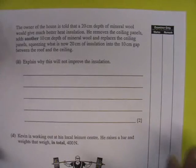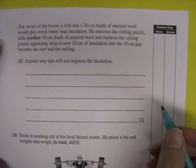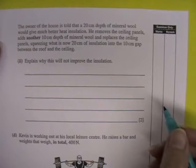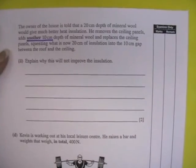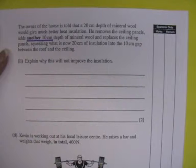The owner of the house is told that a 20cm depth of mineral wool would give much better heat insulation than the 10cm he currently has. So he removes the ceiling panels, adds another 10cm depth to the original 10cm and replaces the ceiling panels, squeezing what is now 20cm of insulation into the 10cm gap between the roof and the ceiling.